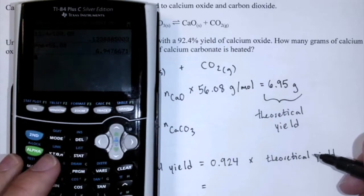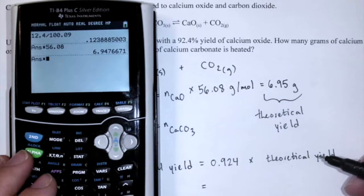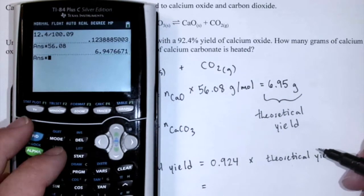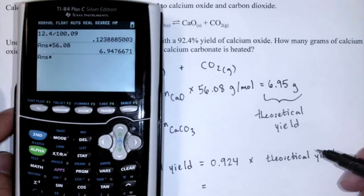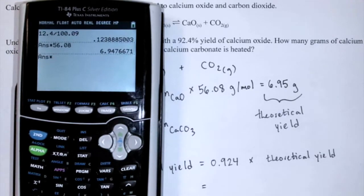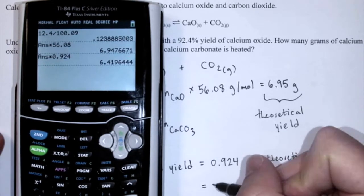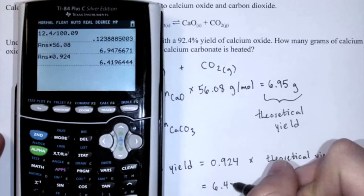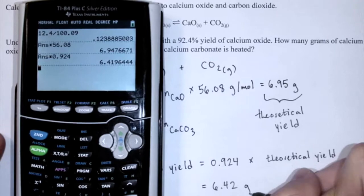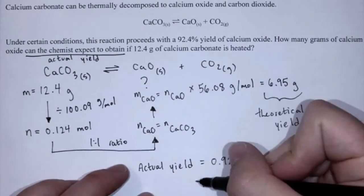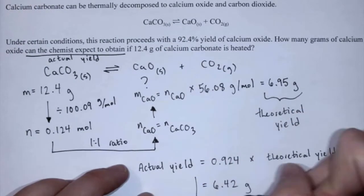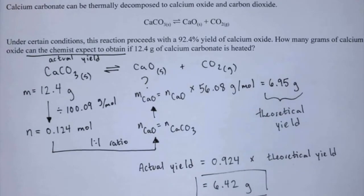We take 6.9477 and multiply it by 0.924 and we get an actual yield of 6.42 grams.